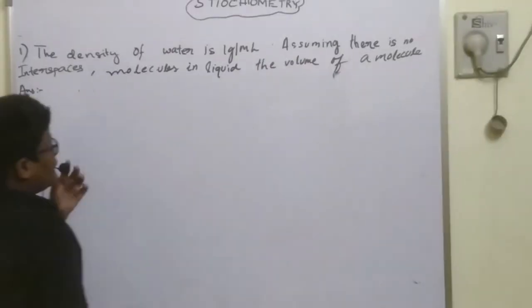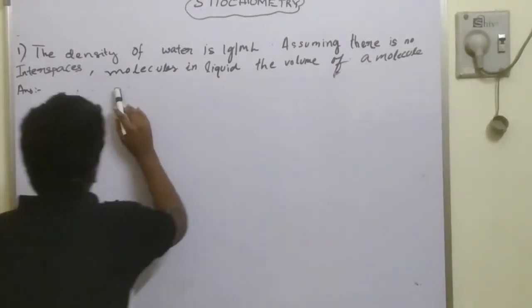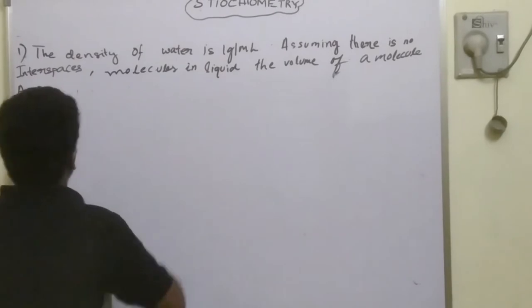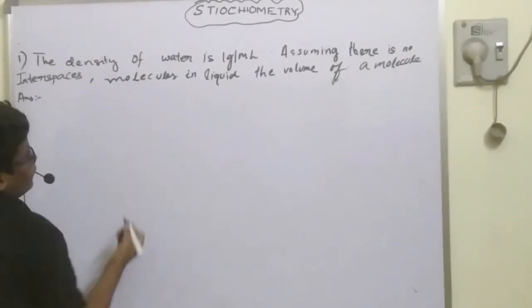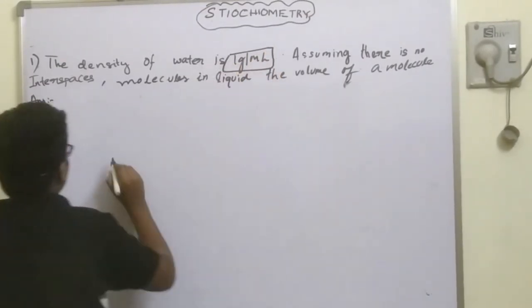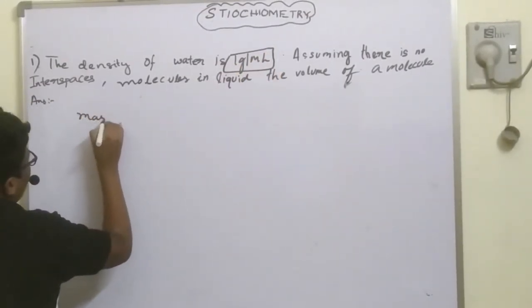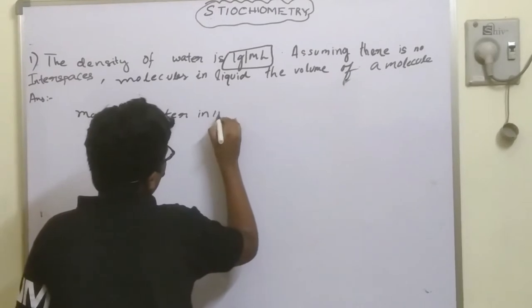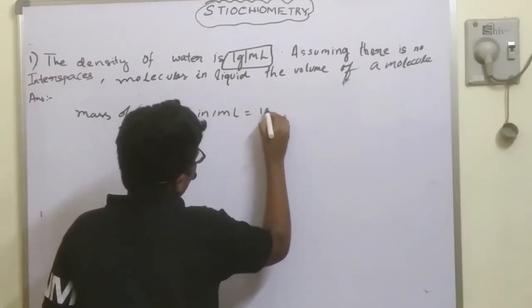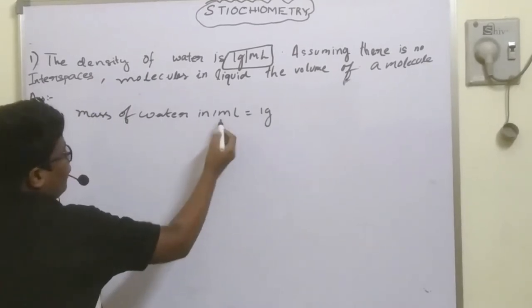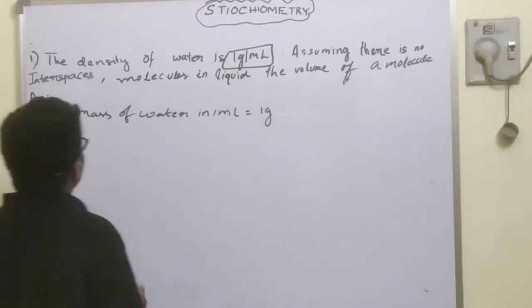The density of water is 1 gram per milliliter, assuming there are no interspaces between molecules in liquid. The density of a molecule is given as 1 gram per milliliter. Mass of 1 mL of water is equal to 1 gram, meaning 1 gram per 1 milliliter.